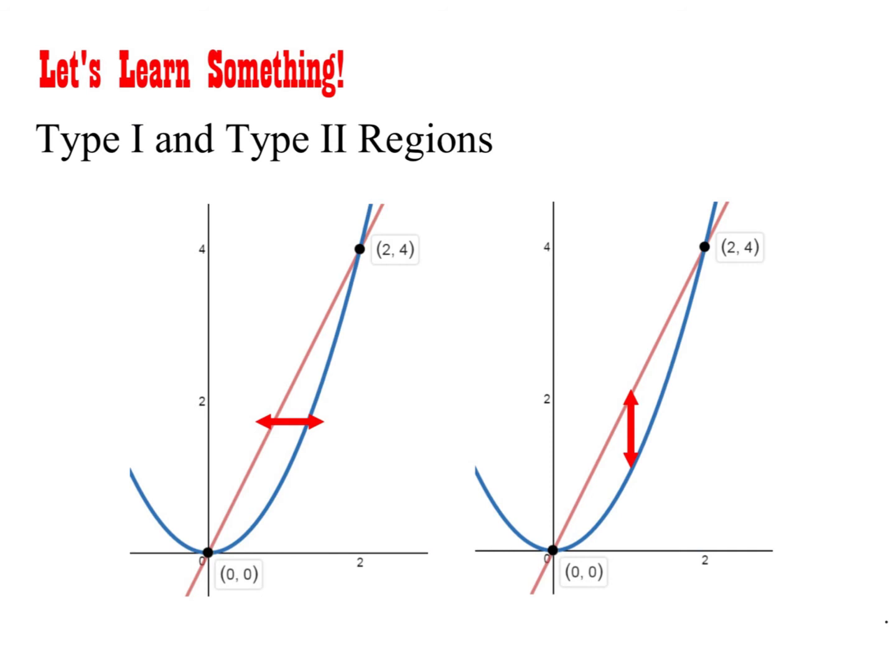All right, so I just want to talk about type 1 and type 2 regions with these types of double integral problems. And type 1 and type 2 really have to do with just which direction you want to talk about. This would be considered right here. I know I put them in kind of a weird order. This would be considered a type 1.